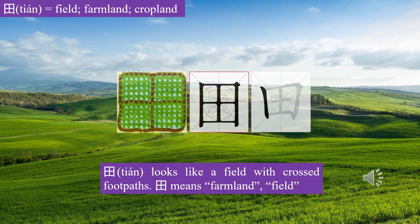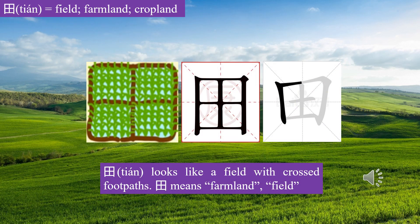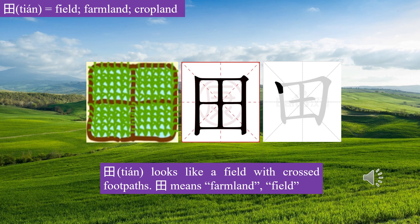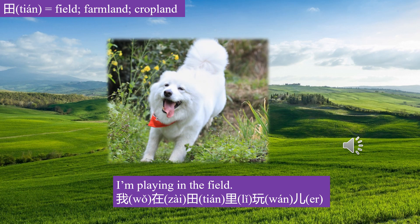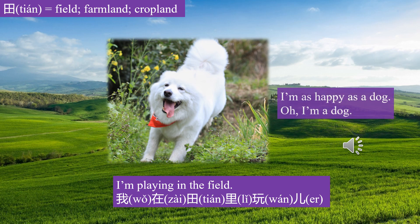I hit a fish! Let's learn character Tián. 田 looks like a field. We cross the footpath. 田 means farmland, field. I'm playing in the field. 我在田里玩。